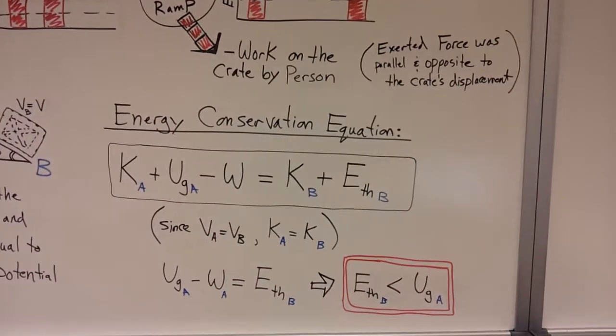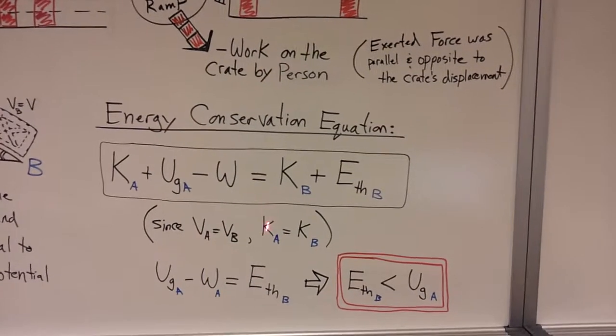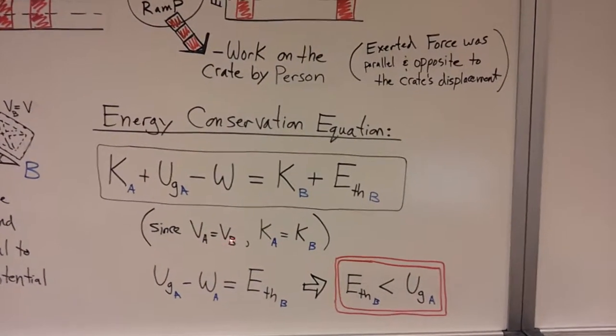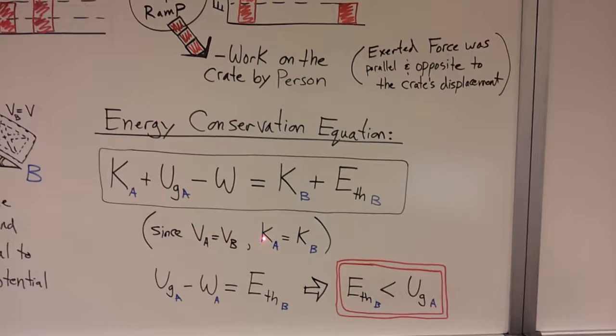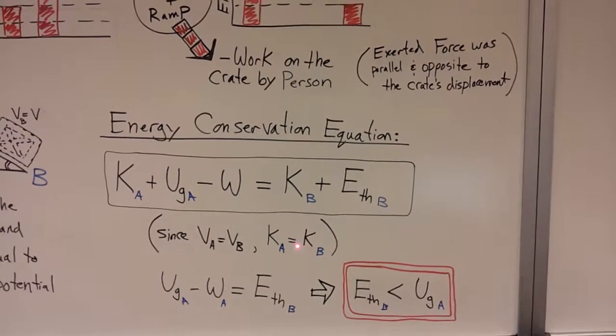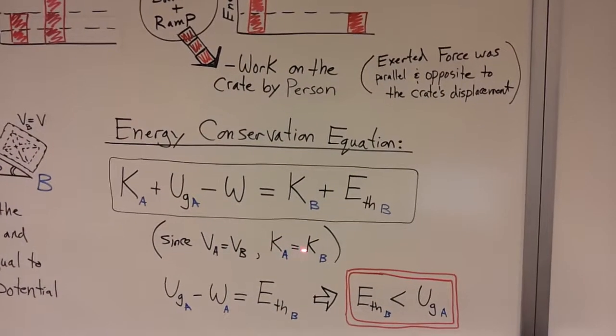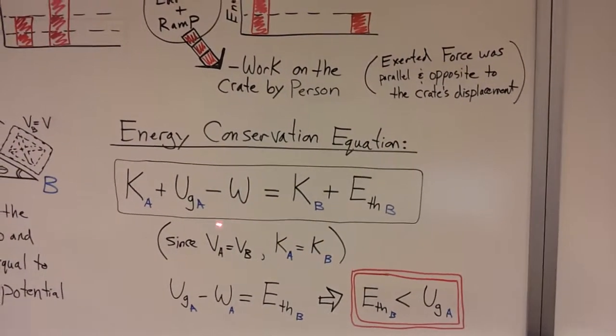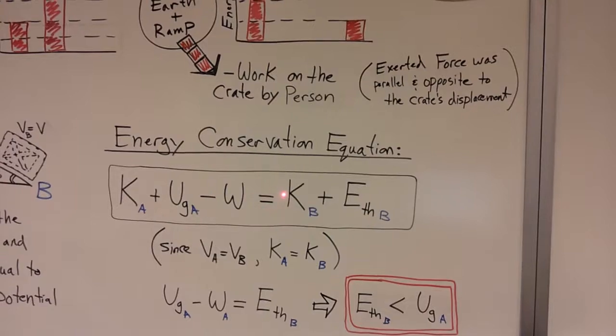But remember, the box was moving down at a constant velocity, so the velocity at A is equal to the velocity at B, which means the kinetic energy in the beginning is equal to the kinetic energy in the end. So if those kinetic energies are the same value, then in this equation, we can just cancel those things out.